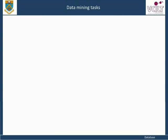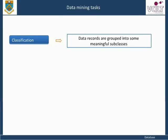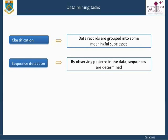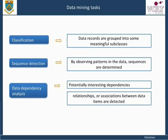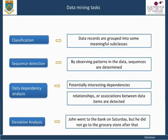The most common types of data mining tasks are: Classification — data records are grouped into meaningful subclasses; Sequence Detection — by observing patterns in the data, sequences are determined; Data Dependency Analysis — potentially interesting dependencies, relationships, or associations between data items are detected; and Deviation Analysis — anomalous instances and discrepancies are found, for example when a person's behavior deviates from an expected pattern.